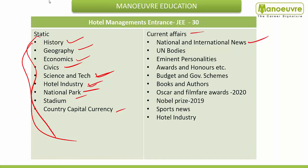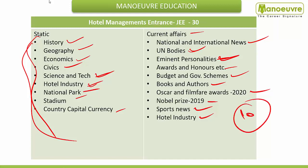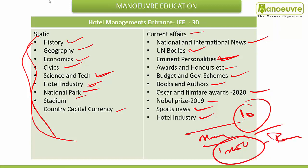For static GK, you need to prepare history thoroughly and practice all MCQs. Study geography and economy-related questions. Civics, science and technology — basic understanding is needed. One question will cover the hotel industry. Study national parks, stadiums, countries, capitals, and currencies — there's a chance questions will come from these. For current affairs, keep observation of national and international news. Follow United Nations bodies — WHO, UN Security Council, and other world organizations. Focus on eminent personalities in recent news, awards and honors distributed recently. Check the budget — it may be asked. Books and authors, Oscars and Filmfare — recent events in the last five months. Nobel Prize 2019 distribution — you must check. Continue covering sports news and hotel industry current affairs — important hotels and monuments in India.